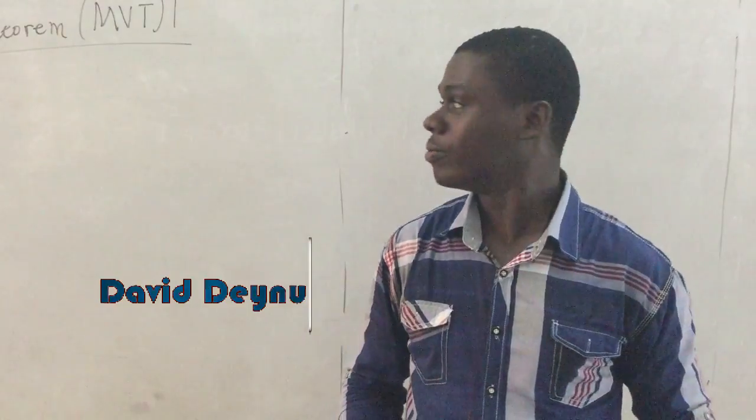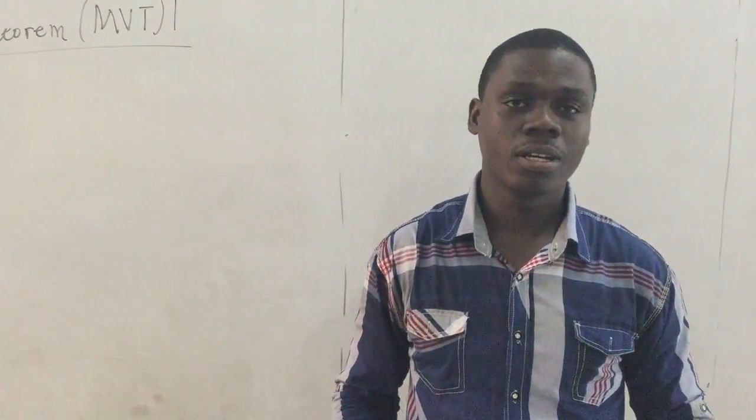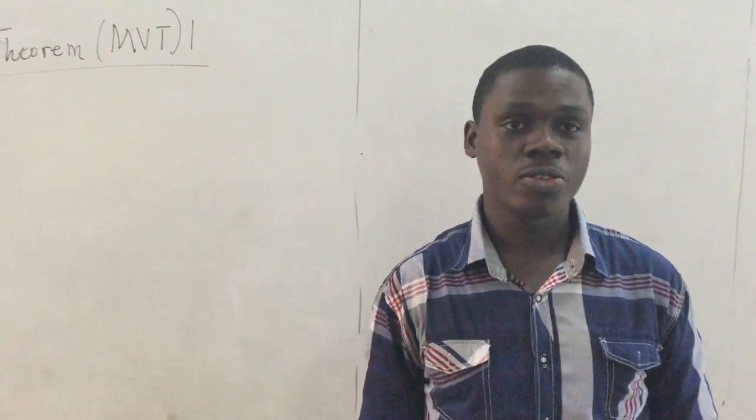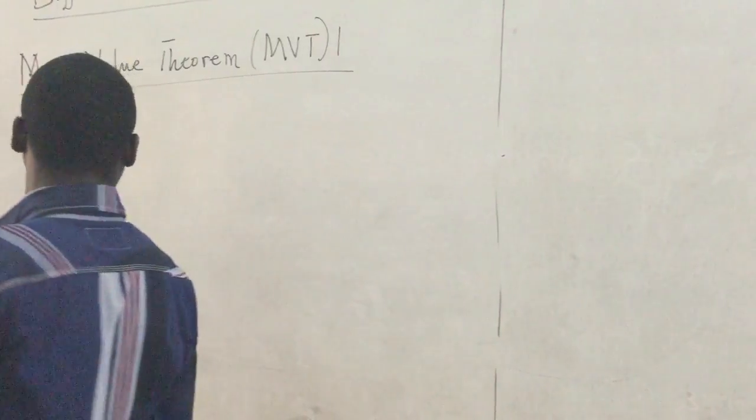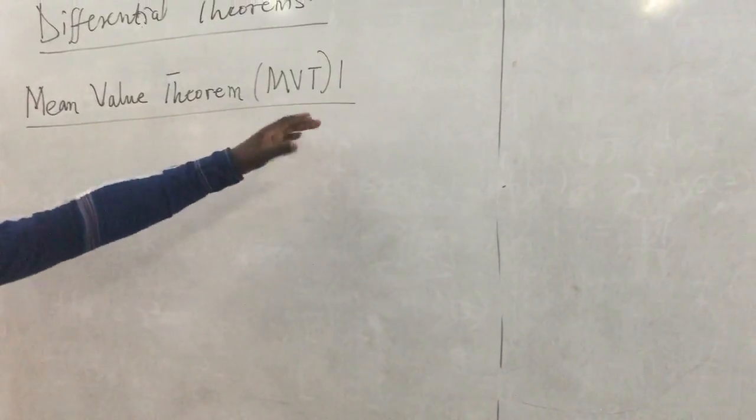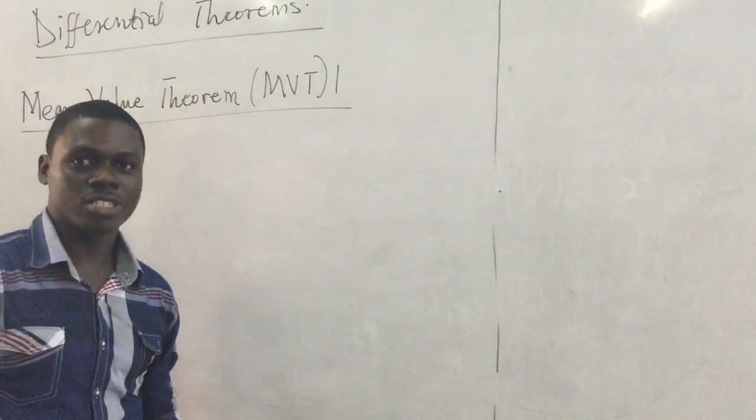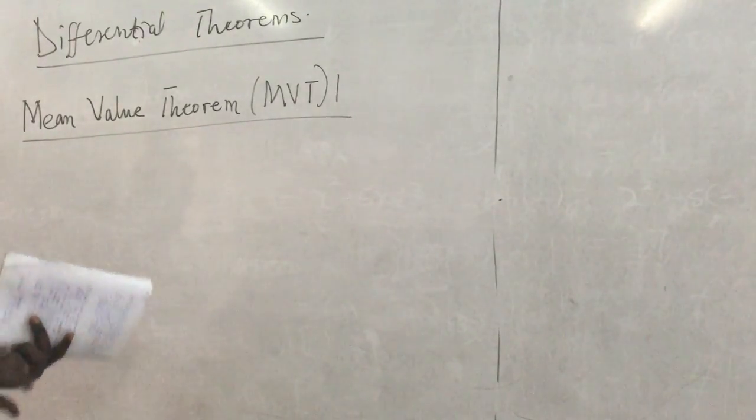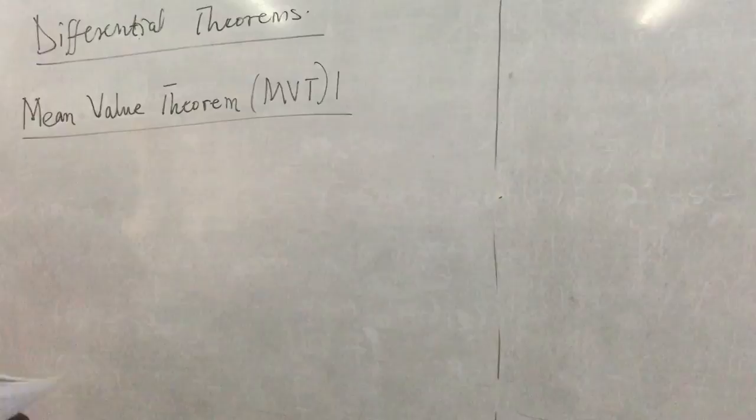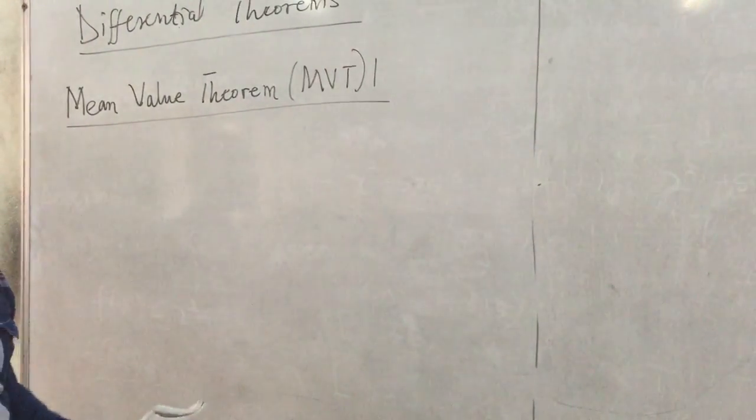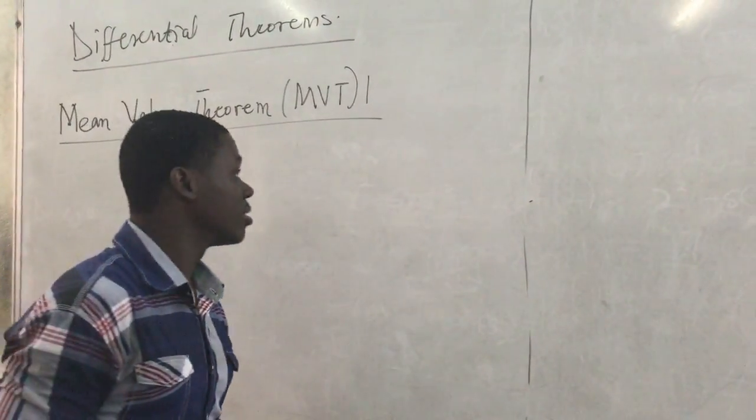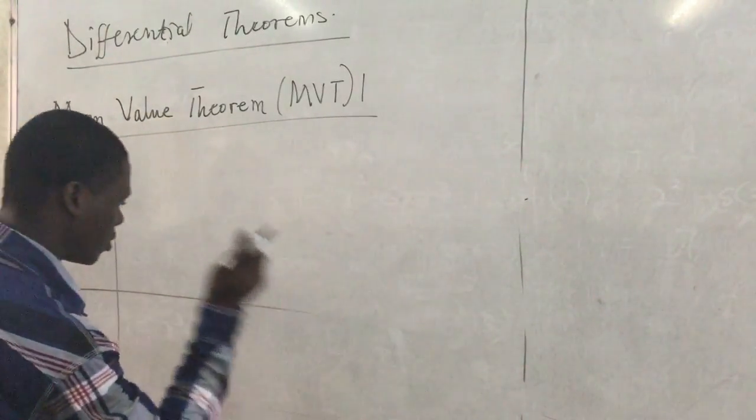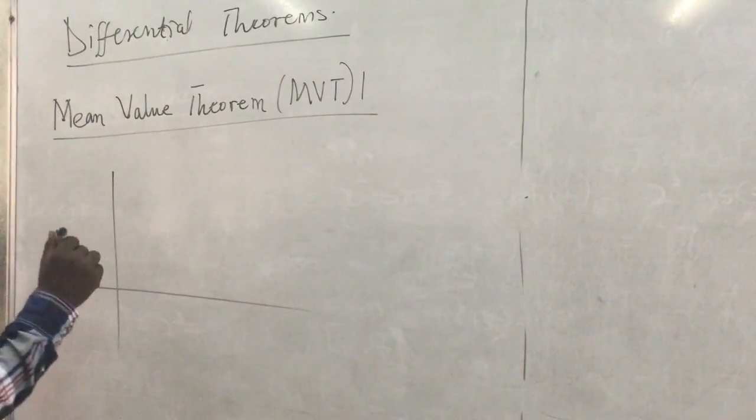In today's video, we're looking at differential theorems and more especially, we're looking at the Mean Value Theorem. The theorems we have: one is the Mean Value Theorem and the other one is the Cauchy Mean Value Theorem, which is two. But this particular one, what actually are we looking at? We have been finding numbers over the years, but this particular one, we want to just look at a certain function. Let's speak of function. But before we state the theorem, let's look at something.